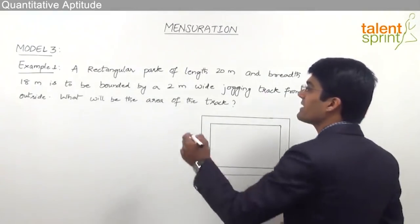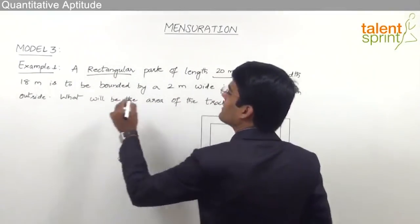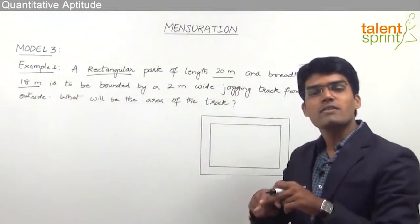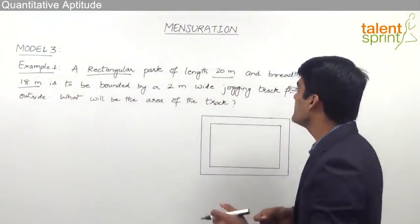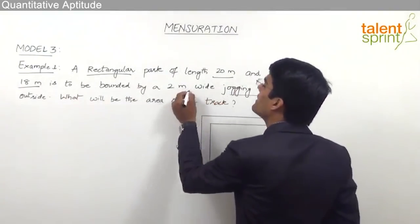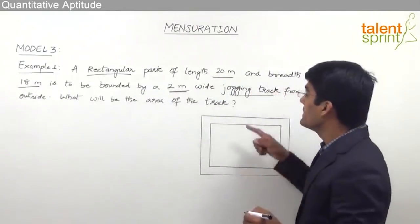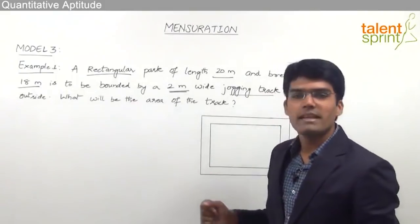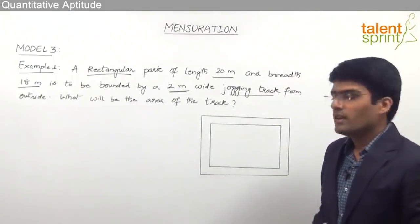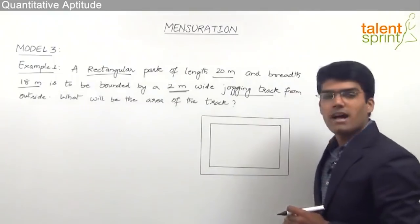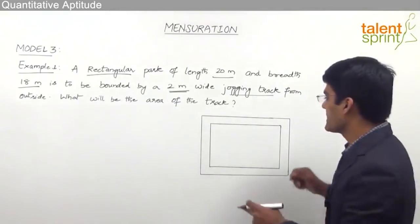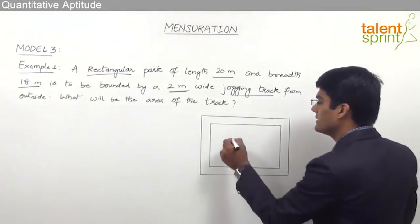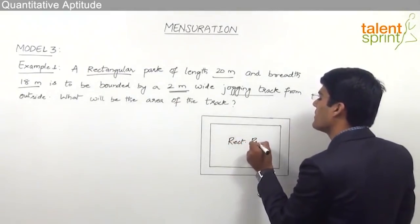As you can see, there is a rectangular park with length 20 meters and breadth 18 meters. This rectangular park has to be bounded by a jogging track that is 2 meters wide, and this track is constructed outside the rectangular park. We need to find out the area of the jogging track. The inner rectangle we see here is the actual rectangular park which the question is talking about.